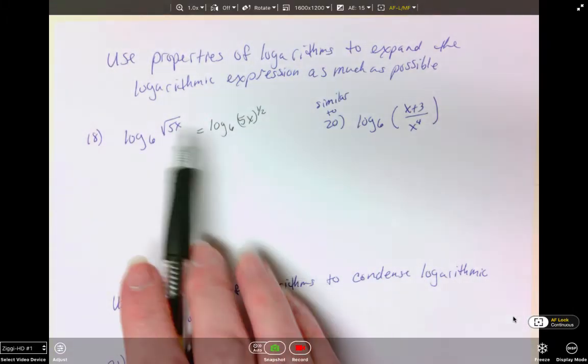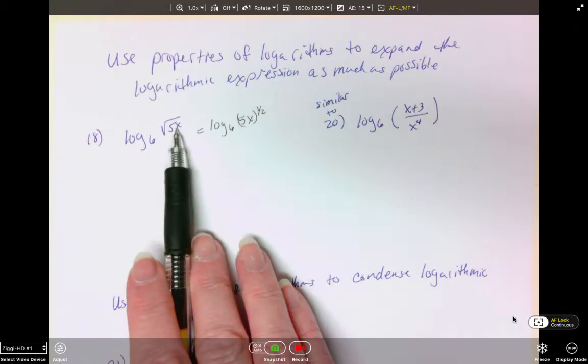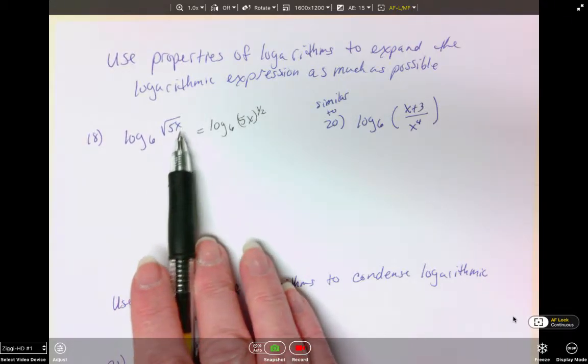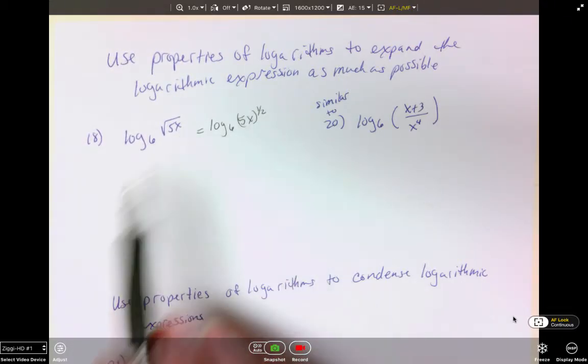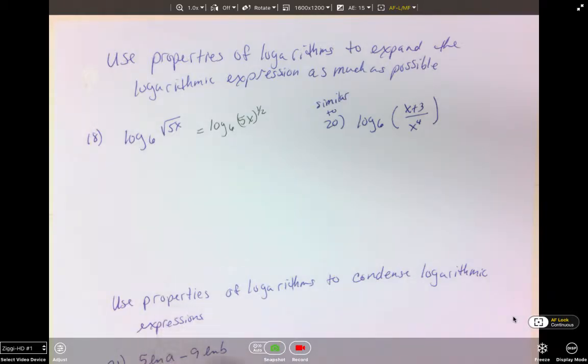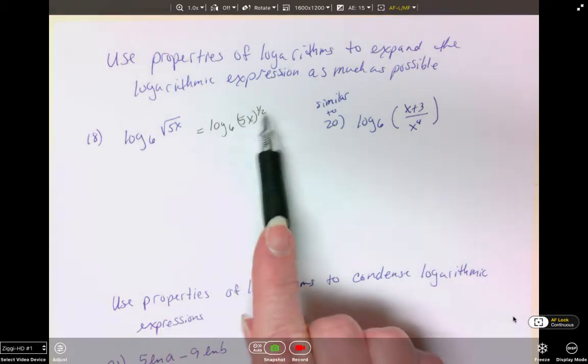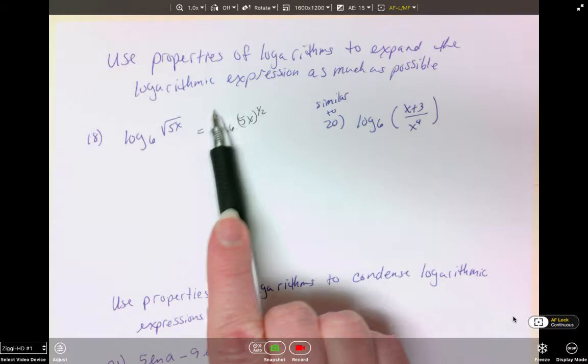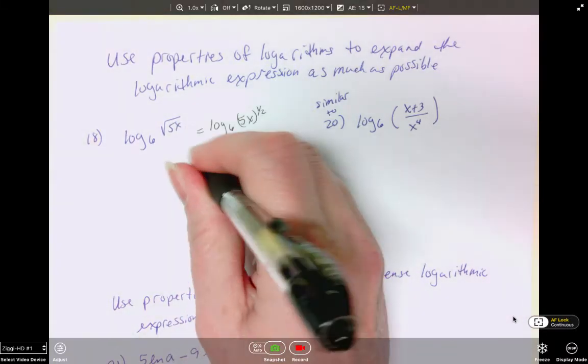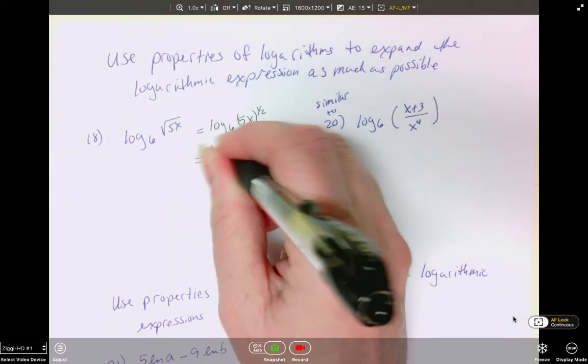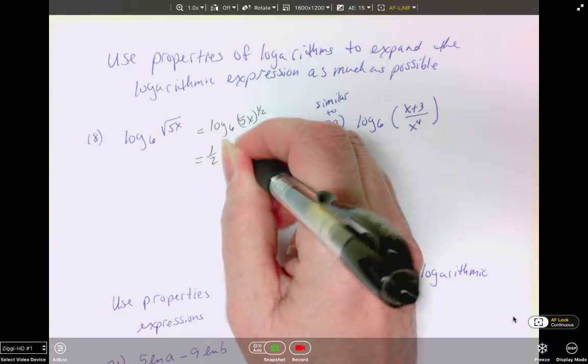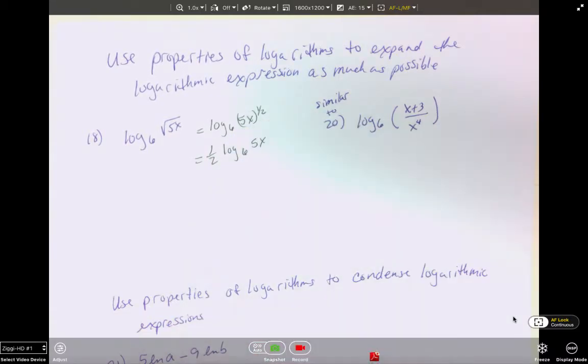Now we have to put that in parentheses because the entire part of 5x was underneath our radical. If it wasn't, we would only put the exponent on what it actually was a part of. So we're going to move our exponent out front first. So this will be 1/2 log base 6 of 5x.